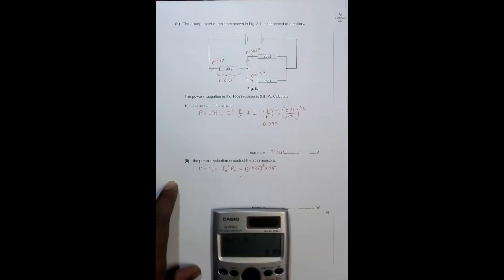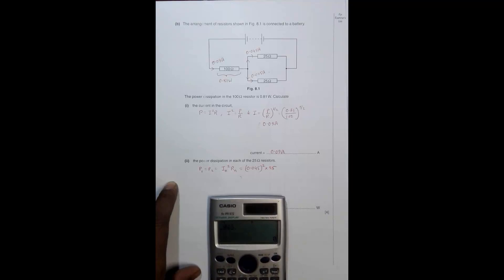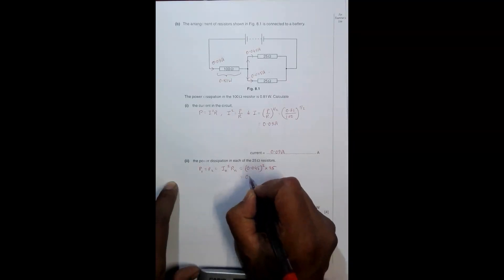The power in each 25 ohm resistor is P = I² × R = (0.045)² × 25 = 0.002025 × 25 = 0.050625 watt, which is approximately 0.051 watt. So in each of the 25 ohm resistors, the power dissipated is 0.051 watt. That is the final answer.